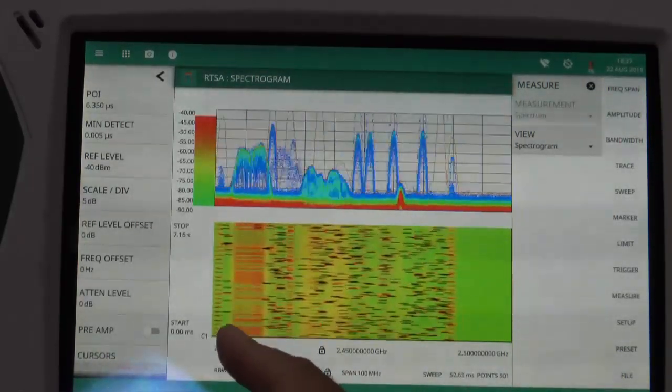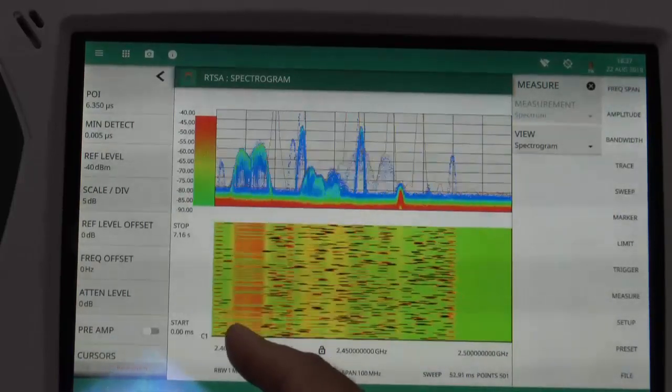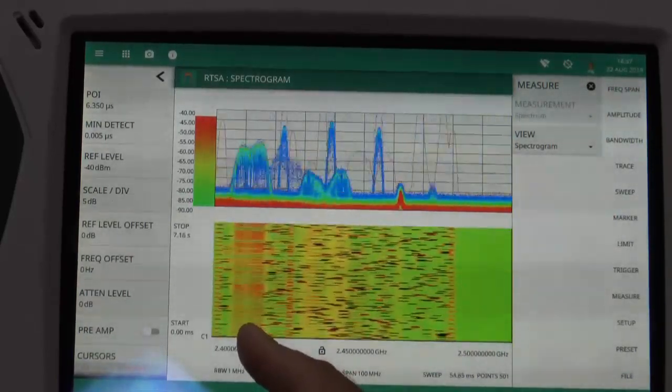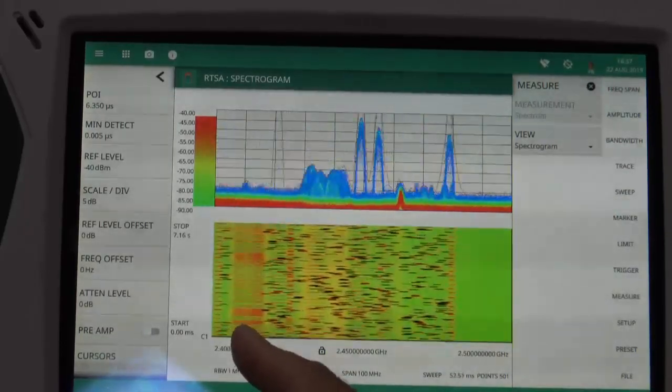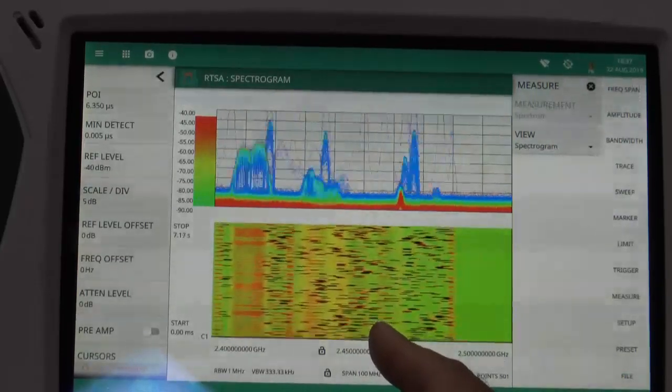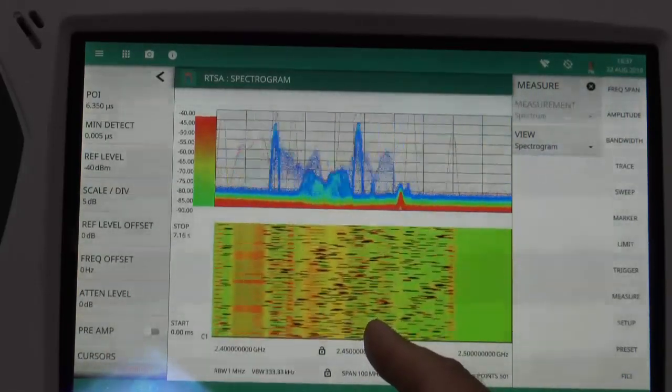It's also interesting to note that over a period of time, Bluetooth will exclude channels where there's an active wireless LAN signal. This is known as adaptive frequency hopping and it's a way of ensuring that the Bluetooth signal gets through even in the presence of other transmitters.